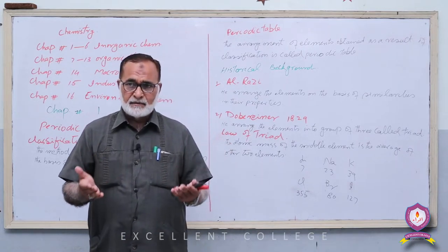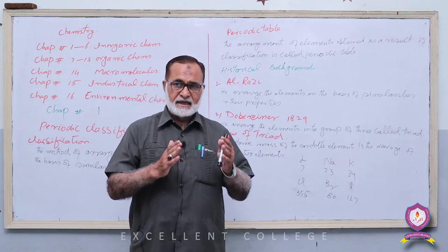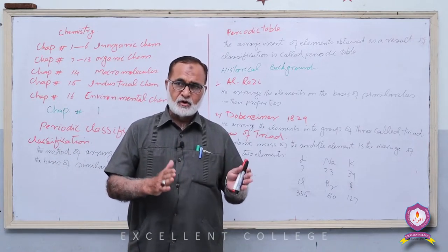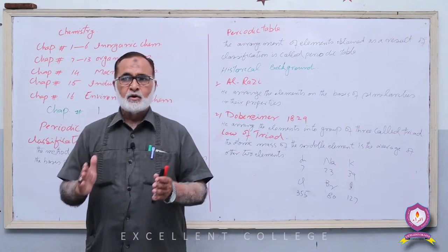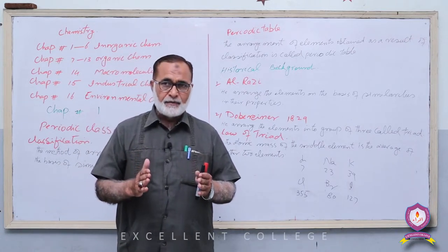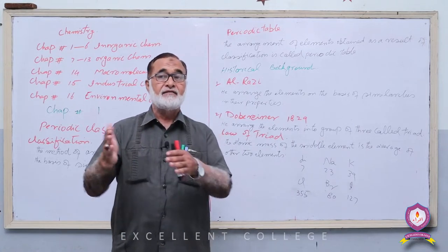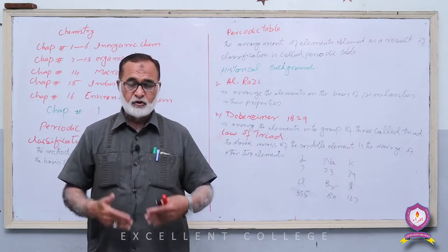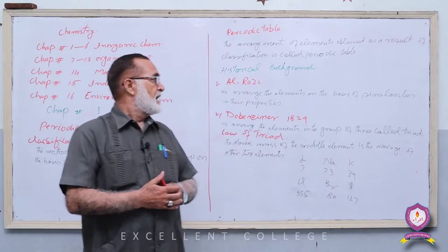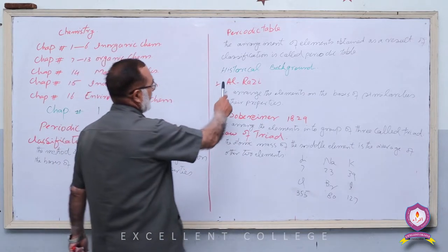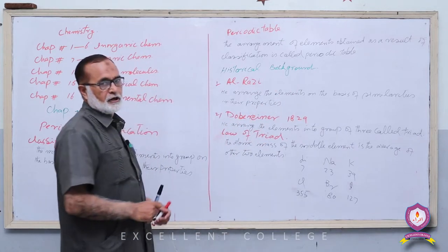اسے Periodic Table اس لیے کہا گیا کیونکہ elements کو ان کے atomic mass کی بنیاد پر ترتیب دیا گیا، اور دیکھا گیا کہ ان کی properties ایک خاص interval کے بعد repeat ہوتی ہیں۔ اس بنیاد پر اسے Periodic Table کا نام دیا گیا۔ اب ہم دیکھتے ہیں اس کا historical background۔